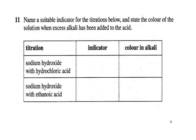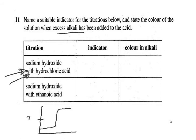This time we're adding excess alkali to the acid, so the pH graph starts low — around pH 2 for a strong acid. It then rises steeply through the equivalence point and finishes above pH 12 for a strong base. This is a strong acid to strong base titration.